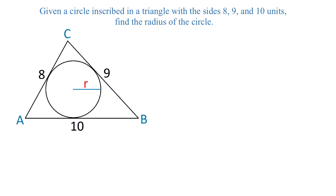Given a circle inscribed in a triangle with sides of 8, 9, and 10 units, find the radius of the circle. To find the radius of this circle, we will start with finding the area of the triangle.